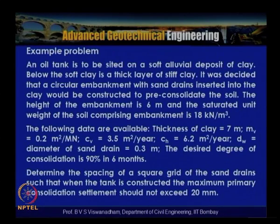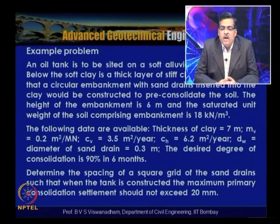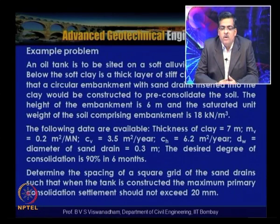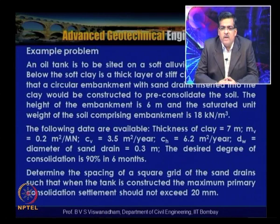We must calculate the final consolidation settlement, then determine what degree of consolidation—both vertical and radial—is required so that the remaining settlement after construction does not exceed 20 mm. Given properties include the coefficient of volume compressibility, coefficients of consolidation in vertical and horizontal directions, diameter of the well, and a desired degree of consolidation of 90% in 6 months.